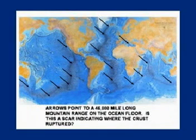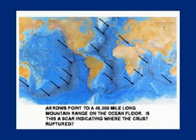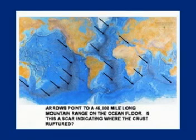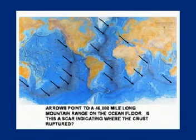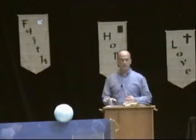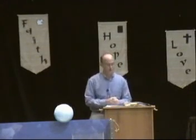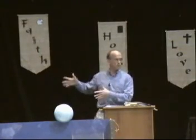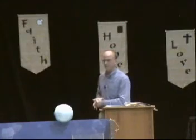This ocean floor mountain — you can't see it because it's underneath the ocean — is a 46,000-mile-long mountain range called the Mid-Oceanic Ridge. When talking about the portion of the ridge in the Atlantic, it's called the Mid-Atlantic Ridge.